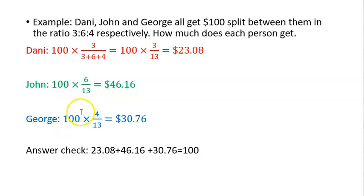The last one is George. We take 100 and multiply it by 4, because 4 represents George, and put it over the total which is 13. This gives us $30.76.